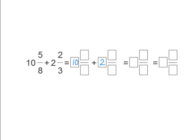Now let's find the common denominator. 8 times 3 and 3 times 8 both equal 24. So 24 is our common denominator, and we can fill those in.